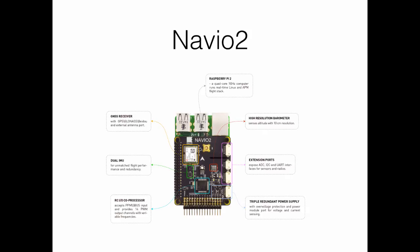Similar to Pixhawk, Navio 2 is also an autopilot but it is a shield for the Raspberry Pi. It operates on Raspberry Pi 2, which is a quad-core 1 GHz single-board computer running real-time Linux, and contains the APM flight stack. An advantage of Navio 2 is that it contains an integrated GPS receiver with an external antenna. It also has dual IMU for redundancy to improve flight performance. The first IMU is the MPU9250 with 9 degrees of freedom, and the second is the LSM9DS1, also with 9 degrees of freedom.